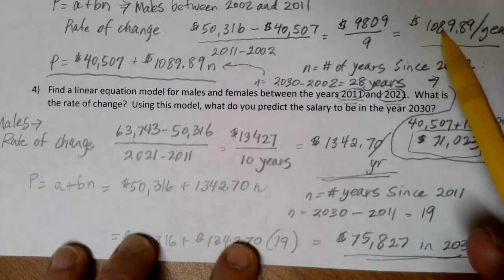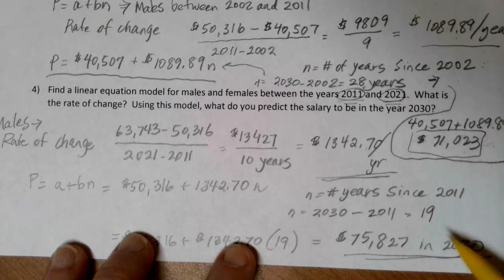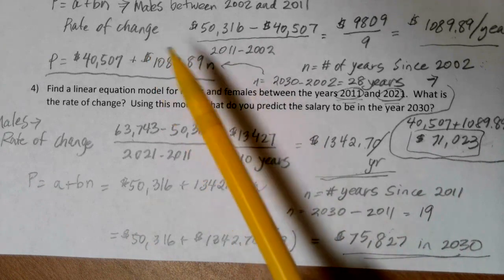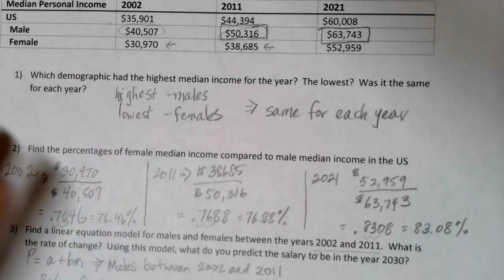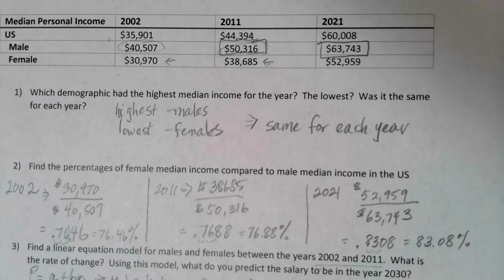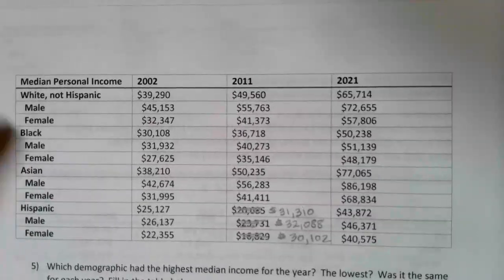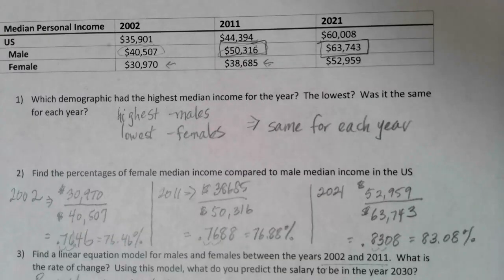Our rate of change increased over this newer period, so it's not surprising that our 2030 prediction has also increased to reflect that. To complete the assignment, go back and find the female equations for each time period and make the predictions. Then you'll also be looking at a breakdown by ethnicity and gender: white male, white female, black male, black female, Asian male, Asian female, and Hispanic male and Hispanic female — figuring out these equations over time for each group. I hope this was helpful; don't hesitate to reach out with questions.